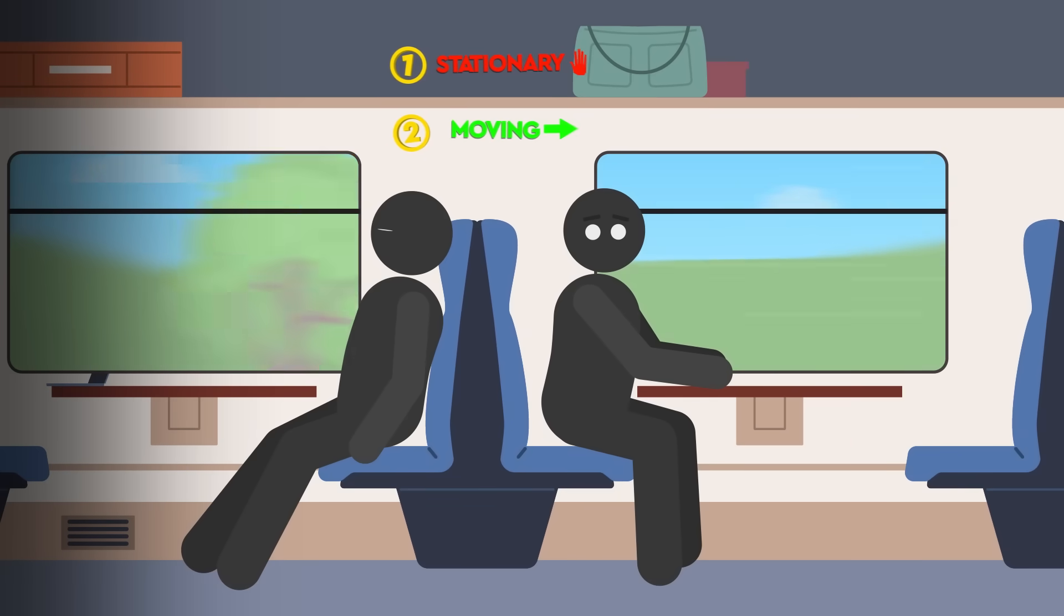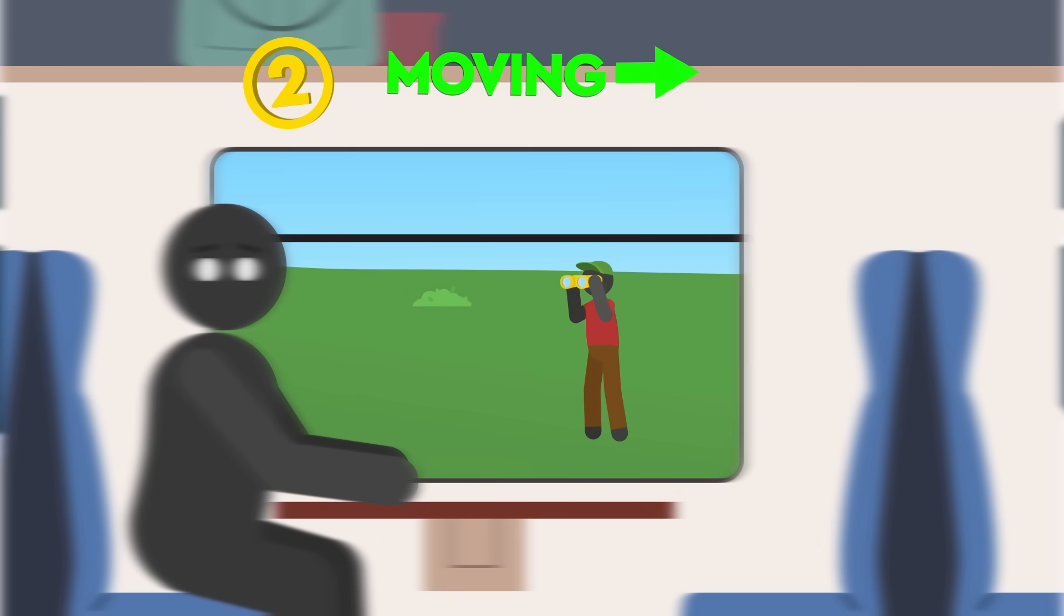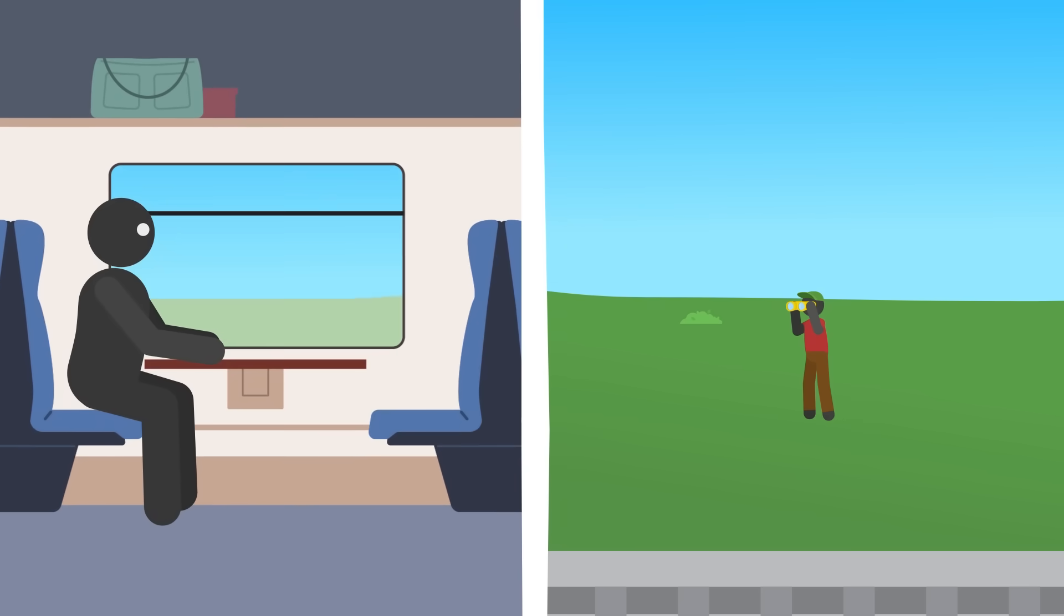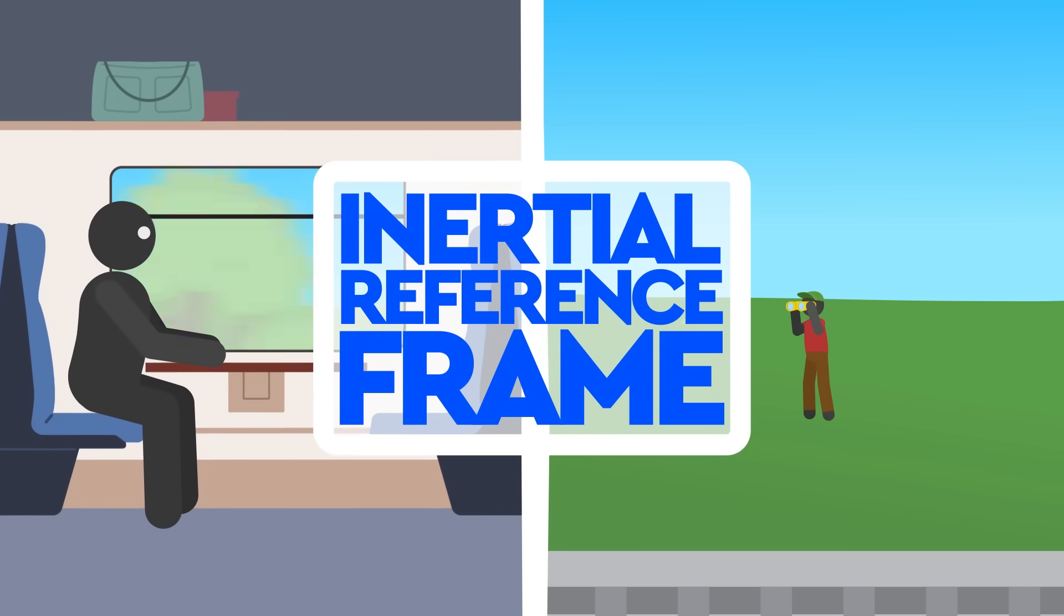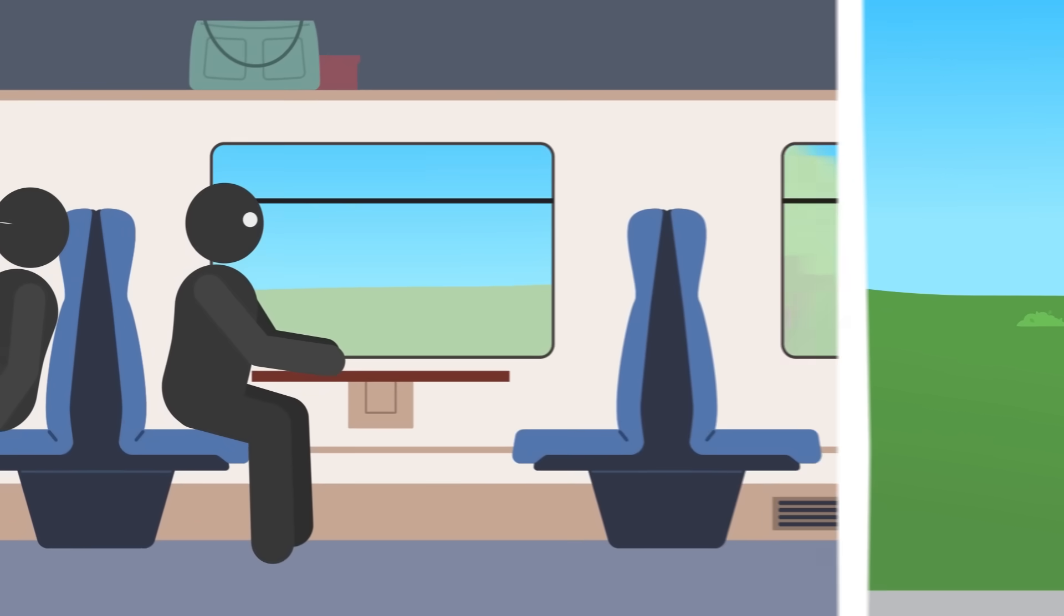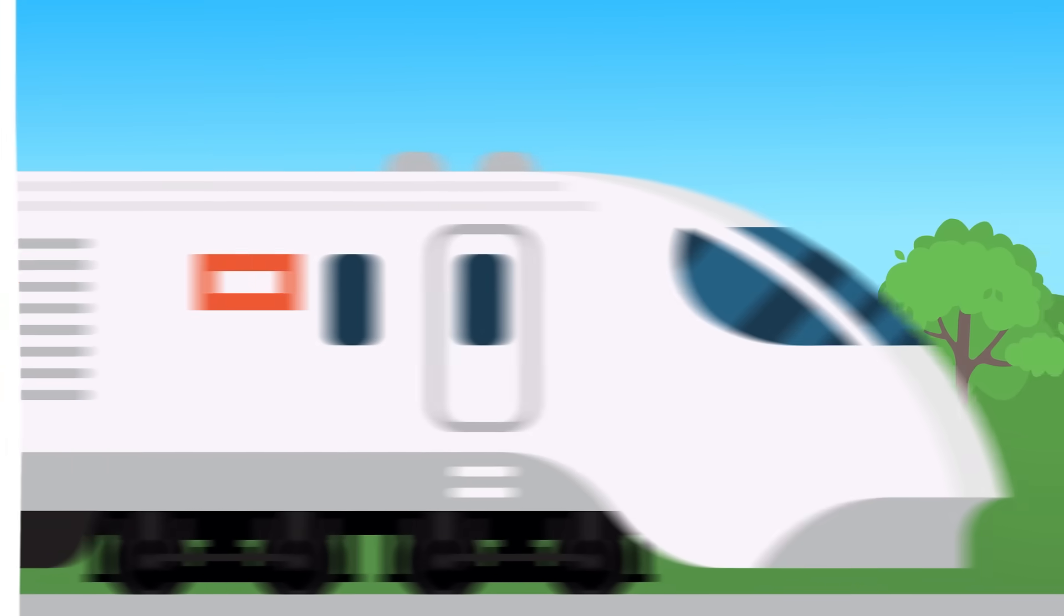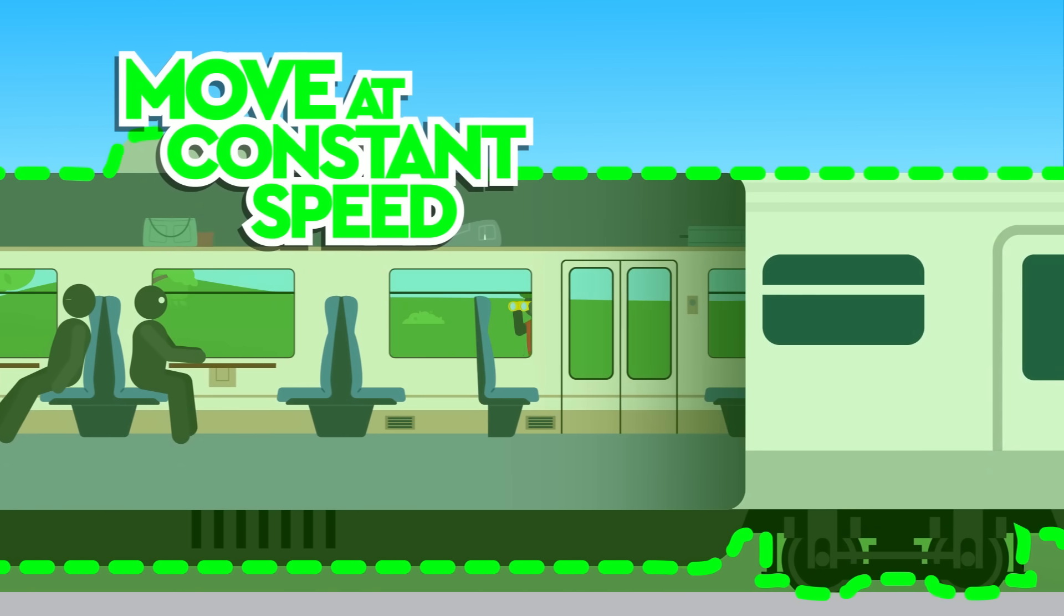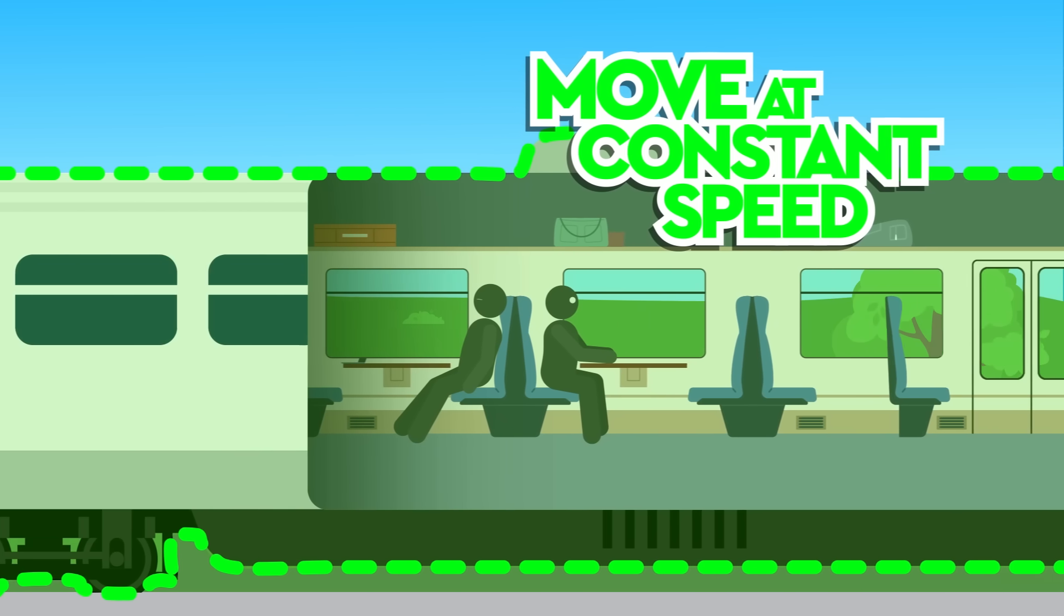Relative to the guy in the seat behind you, you're stationary. Relative to the train spotter you just whizzed past, you're moving at the same speed as the train. Basically, it depends on your frame of reference, or to use the proper physics term, the inertial reference frame of the observer. An inertial reference frame is one in which objects either stay at rest or move at a constant speed in a straight line unless acted upon by an external force. In other words, no acceleration is involved.